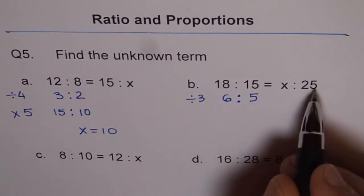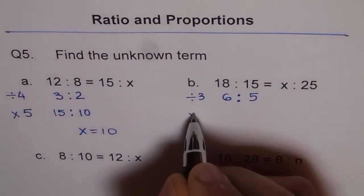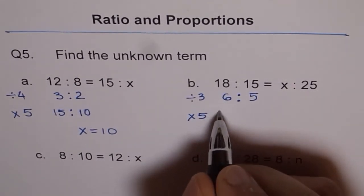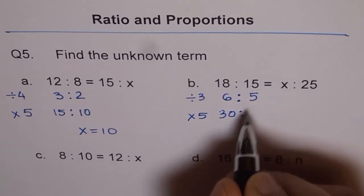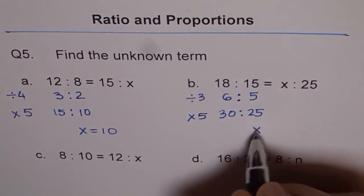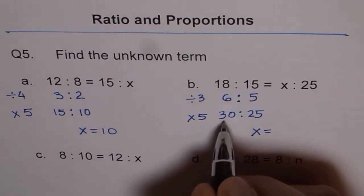Now from 5, we can get 25. You can multiply by 5 and then you get what? 5 times 6 is 30 and 5 times 5 is 25. Therefore, X equals 30.